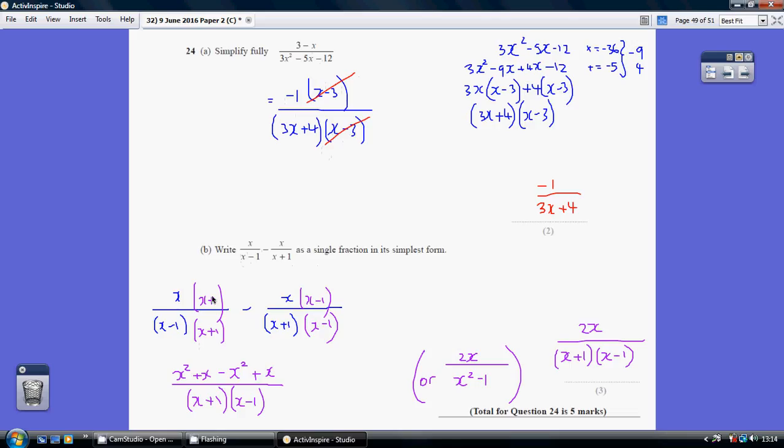We then multiply out the numerators. x times x is x², x times +1 is +x. This is x²-x. But remember, we're subtracting both of those two terms, so that's -x². And be careful, it's +x. Minusing a -x is plusing an x.